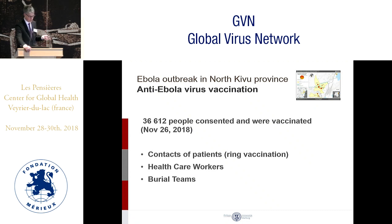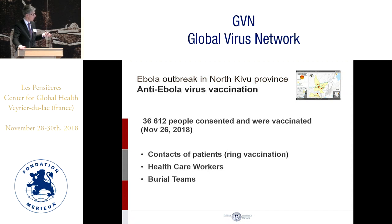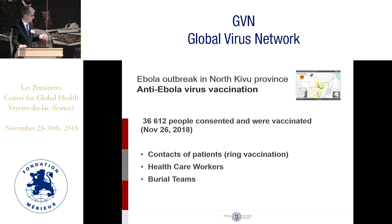There is a lot of vaccination activity taking place during this outbreak. Currently, more than 30,000 people have consented and been vaccinated — contacts of patients, healthcare workers, and burial teams. For an outbreak running three months, more than 30,000 vaccines is really wonderful to see, and it is remarkable that a vaccination campaign is running in such a difficult and dangerous situation.